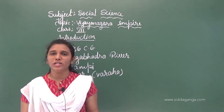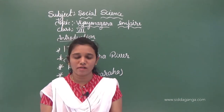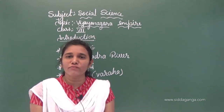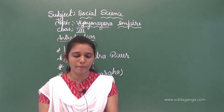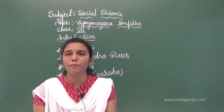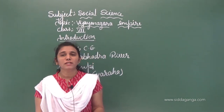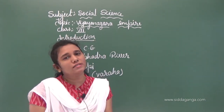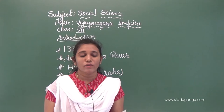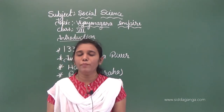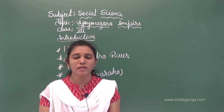Can I ask some questions, children? When was the Vijayanagara Empire founded? — It was founded in 1336. Who were the founders? — The Sangama sons: Harihara, Bukkaraya, Kampana, Marappa, and Mudappa. It is situated on the southern bank of the Tungabhadra River. Their capital was Hampi. Their national emblem was Varaha.